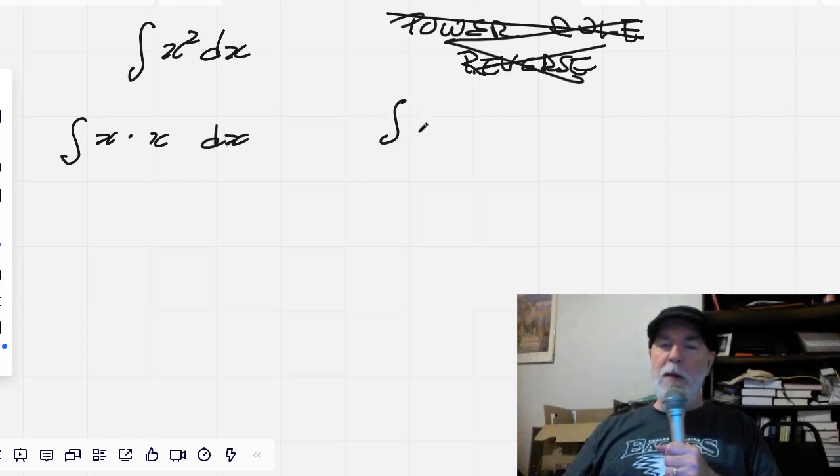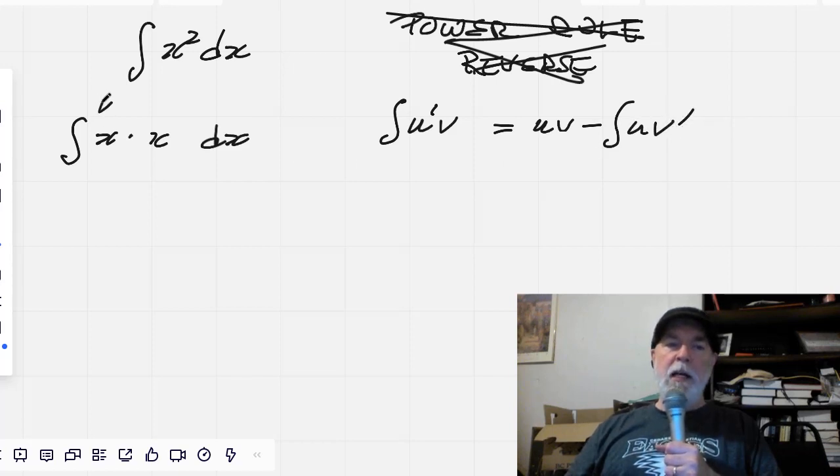So integration by parts over here, we've got integral of u prime v equals u times v minus the integral of u v prime. So I'm going to say that this x here is u prime, and this x here is our v.